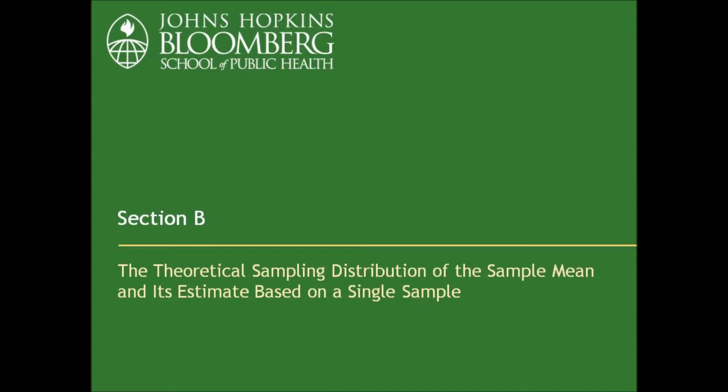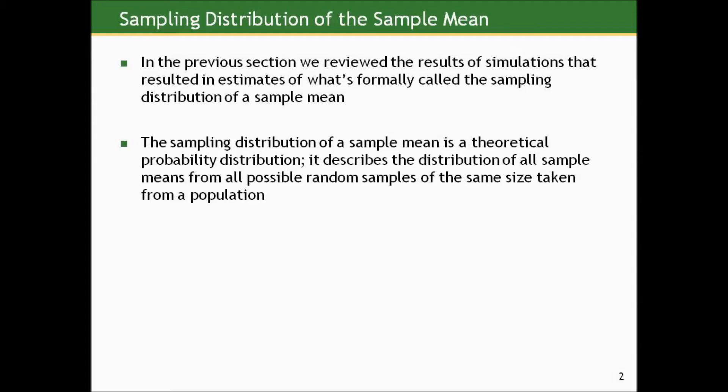In this section, we'll expand upon the ideas we generated in the last section and talk about the theoretical sampling distribution of the sample mean and its estimate based on a single sample. The sampling distribution of a sample mean is a theoretical probability distribution. It describes the distribution of all sample means from all possible random samples of the same size taken from a population.